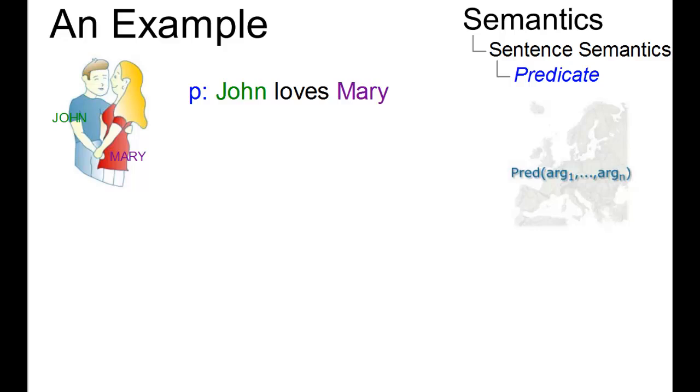The proposition P, John loves Mary, can be broken apart into a predicate, love, and two arguments, John and Mary.